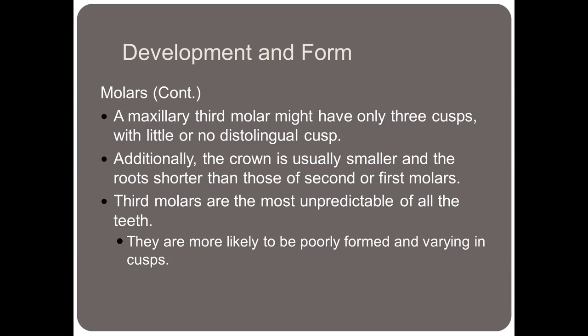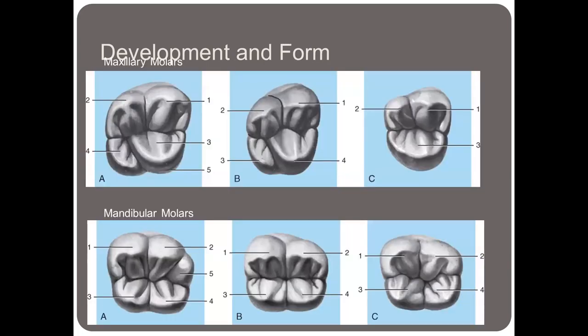Third molars are the most unpredictable of all teeth — they are more likely to be poorly formed and have a variety of cusps. This picture shows the maxillary teeth on top and the mandibular teeth on the bottom — first, second, and third molars. You can see the first molars are quite large compared to the second molar, and then the third molar is even smaller.